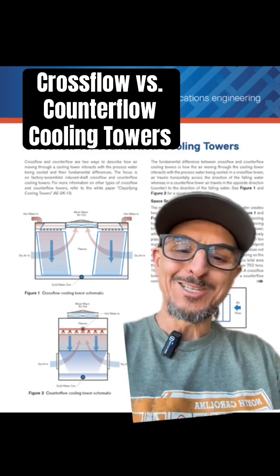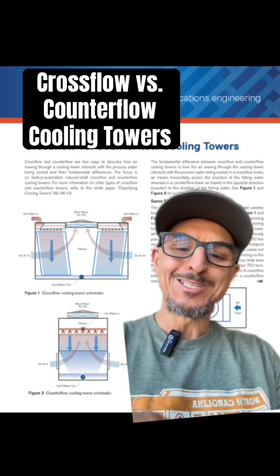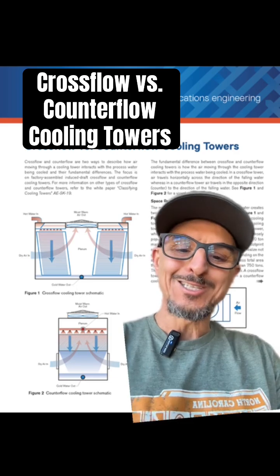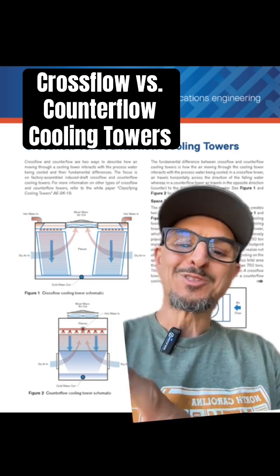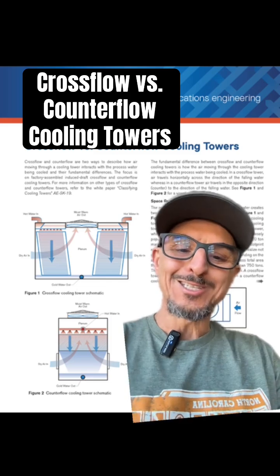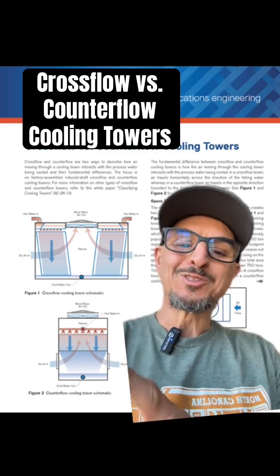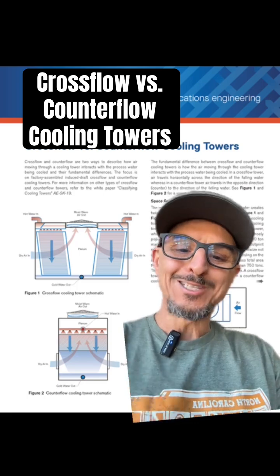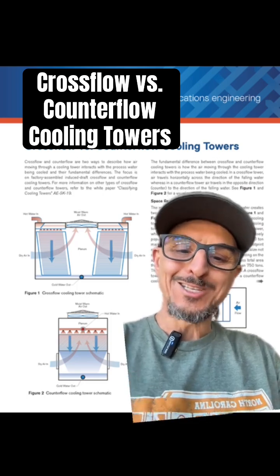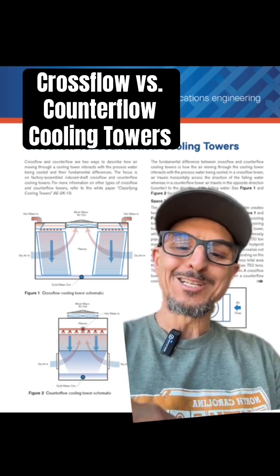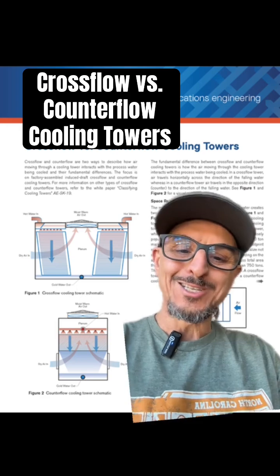So why would you use cross flow versus counter flow? Generally speaking, counter flow is more efficient, a little quieter, but takes up more space. So for compact, smaller towers where real estate is really important, you probably want to look at using a counter flow.